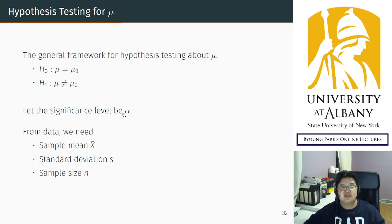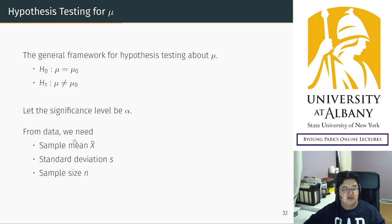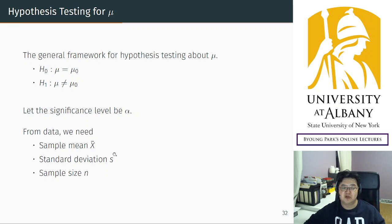The significance level will be alpha, which is what you choose. From the data, you need the sample mean as a test statistic observation, and the standard deviation needs to be calculated because we need the parameter for the standard normal distribution, and sample size, which is simple.